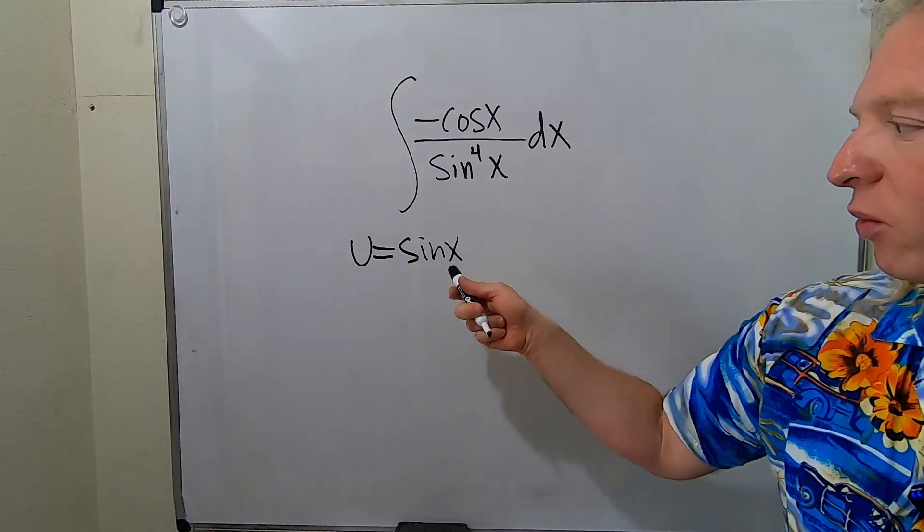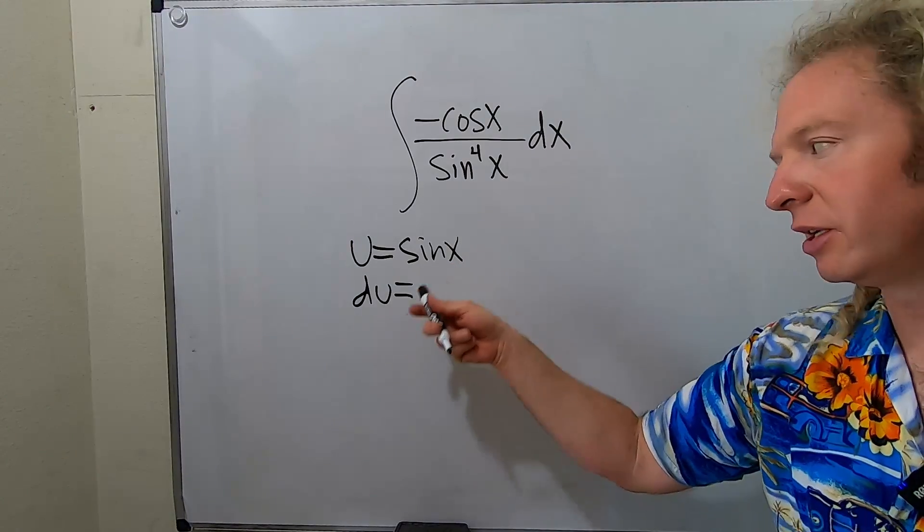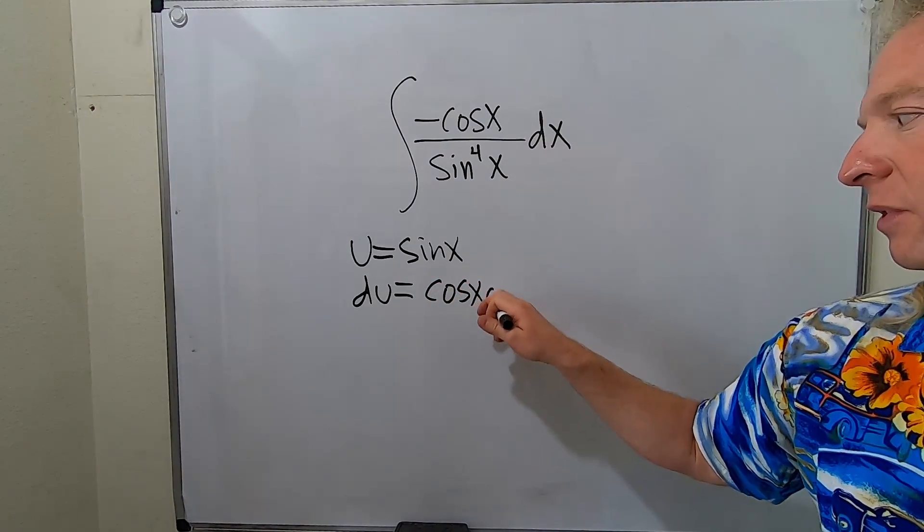And then notice right away when you compute du, that's the derivative of u, and the derivative of sine is cosine. So we get cosine x dx.